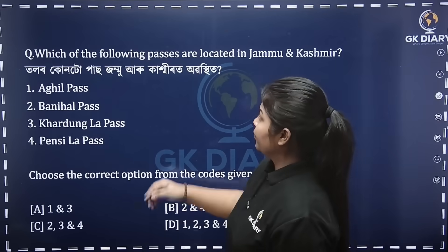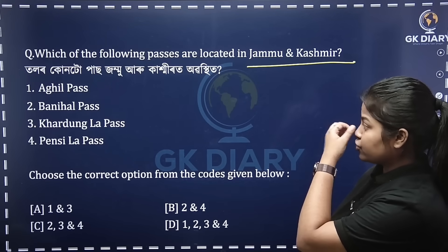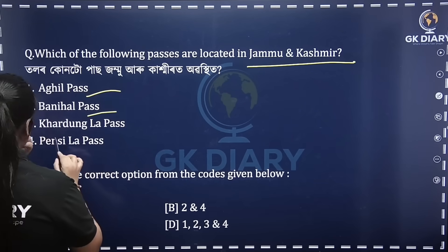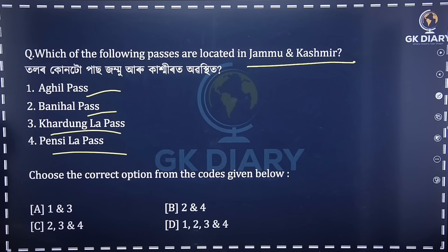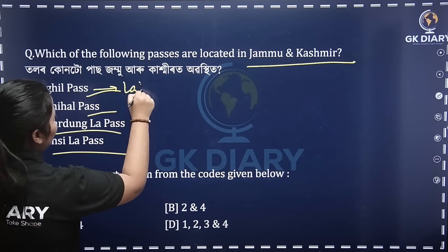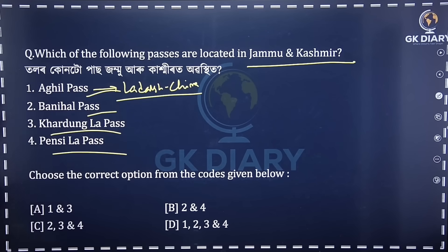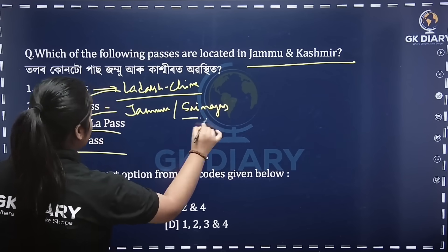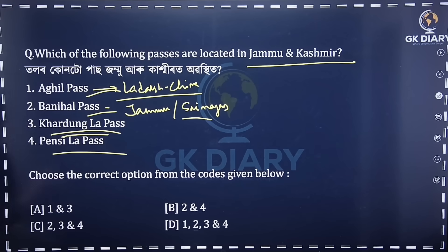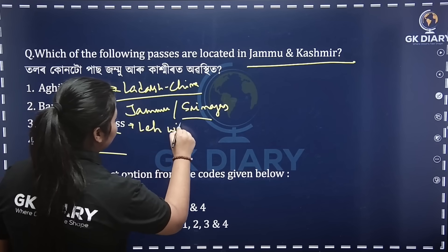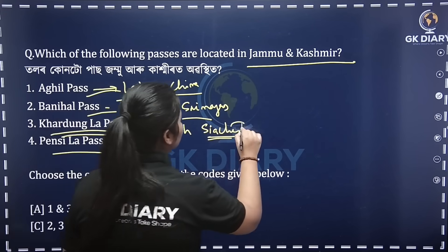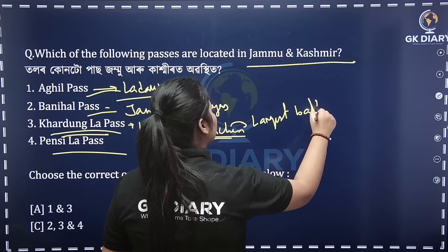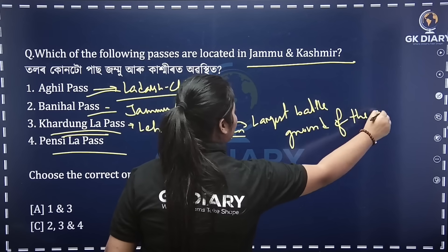Next question: which of the following passes are located in Jammu and Kashmir? The pass is located in Jammu and Kashmir, and in New India. From Ladakh and China, Ladakh and the border — not many people remember. Siachen Glacier is the largest battleground of the world. This is an important point.